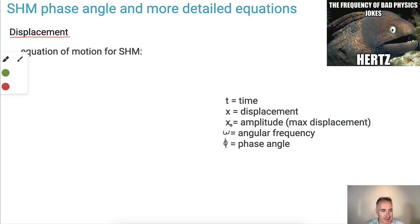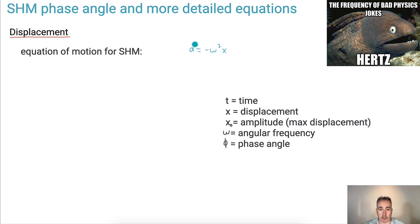Let's look at this. First of all, remember that the equation for simple harmonic motion goes like this: A equals minus omega squared X. It turns out if you were advanced in math, you could actually solve this — it's a differential equation — and if you're really careful with it, you'd end up with a solution.